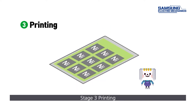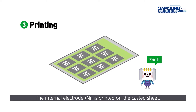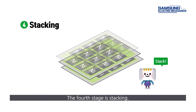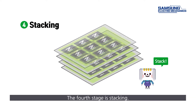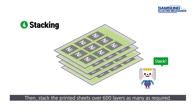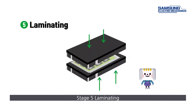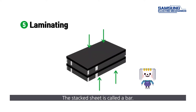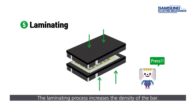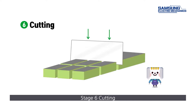Stage three: printing. The internal electrode is printed on the cast sheet. Stage four: stacking. Stack the printed sheets over 600 layers, as many as required. Stage five: laminating. The stacked sheet is called a bar. The laminating process increases the density of the bar.